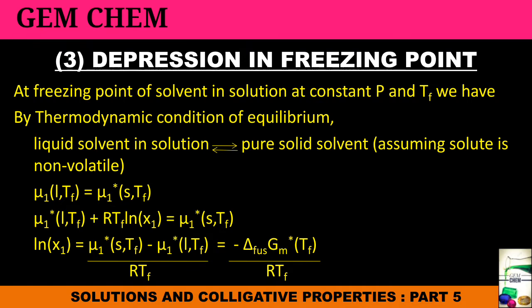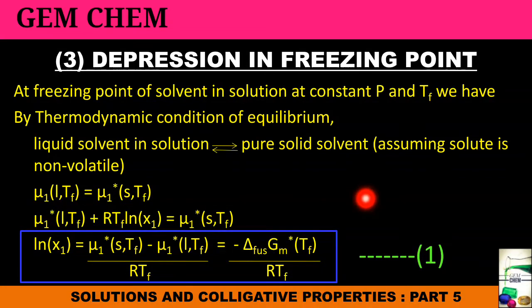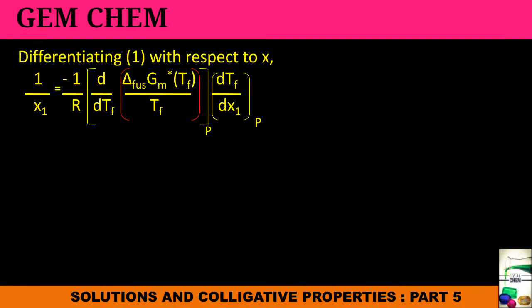Now we will take the ln X1 on the left hand side and put all the things in the right hand side, and this particular expression comes to be equal to Delta fusion free energy change at freezing point. This is our equation 1 for the derivation.